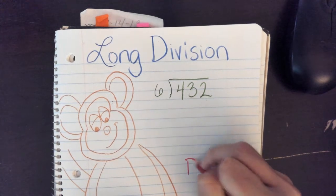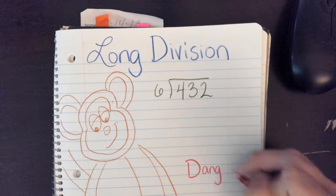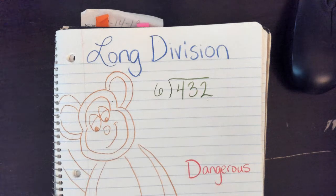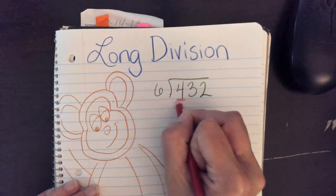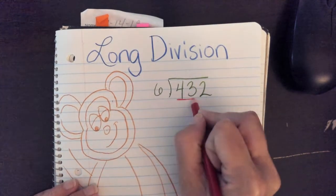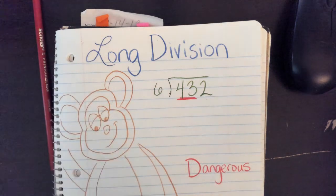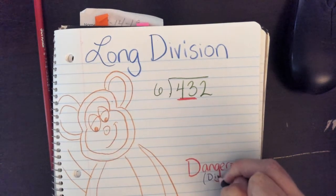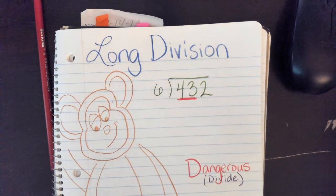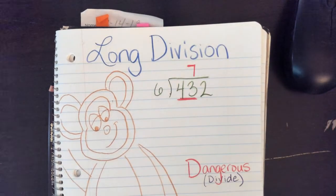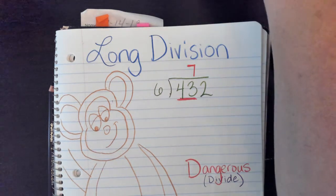The reason this monkey is dangerous is because step one in long division is to divide. The word 'dangerous' helps me remember that step one is to divide. I can't put 6 into 4, but I can put it into 43. Six goes into 43 seven times, so I put 'dangerous' and then 'divide.'